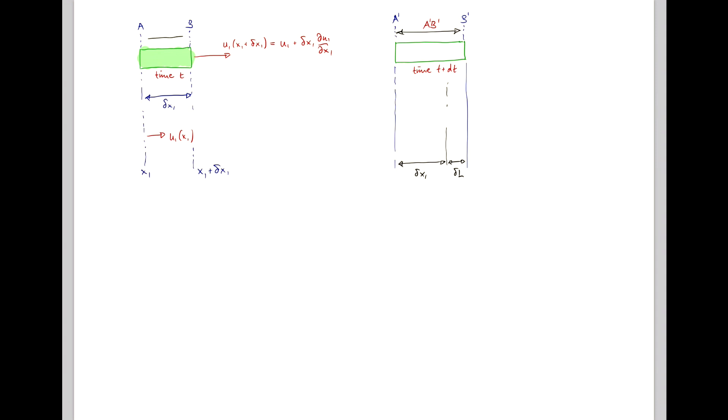whereas delta x1 corresponds to the distance ab. Now the back end of our fluid element has traveled from a to a dash, which is simply the velocity u1 times dt,